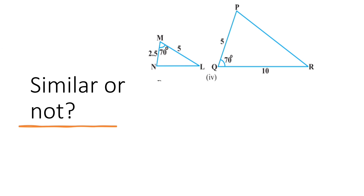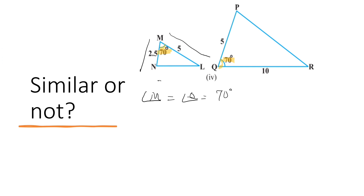Now let us solve the fourth part. Here one angle and two sides are given. The angles given are angle M and angle Q, which are both equal to 70 degrees. Two sides MN and ML contain the given angle of 70 degrees. Similarly, two sides QP and QR include the angle of 70 degrees in triangle PQR.